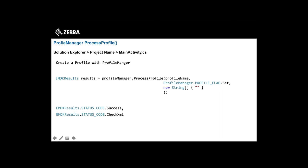Regarding profile results: you'll rarely get a simple success status. Success typically only comes when using the data capture sections of Profile Manager — basically configuring DataWedge through a profile file. Most other profile features return CHECK_XML because they use Zebra's MX (value-add) tools to configure the device. The results object includes a result string containing XML that you can inspect for errors to determine if your profile submission was successful.